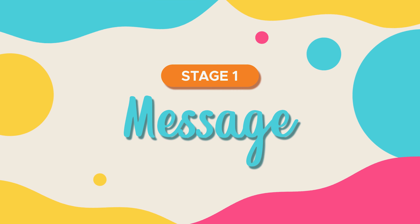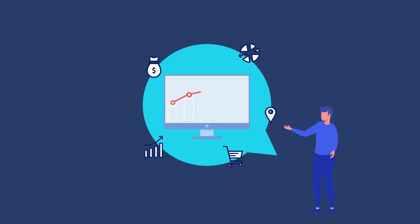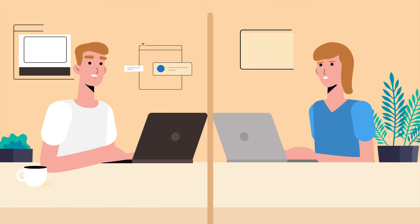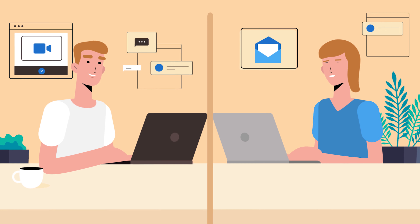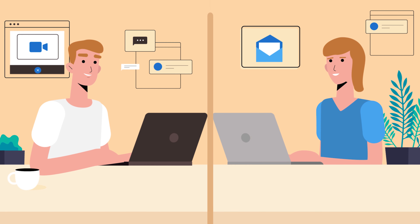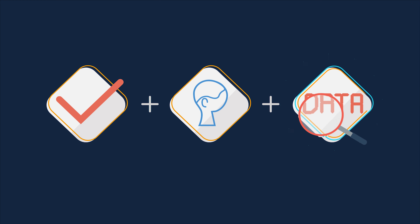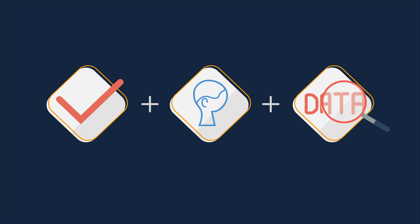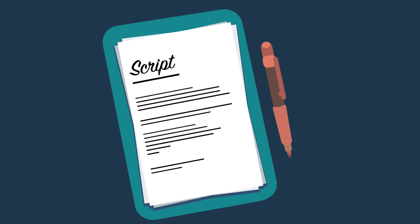Stage one: the message. In order to know your business and send the right message, we will schedule an online meeting and ask for a creative brief to evaluate all the elements, such as the objectives of the video, target audience, and the anticipated start date to begin the project. With all this information, we will build an initial script.